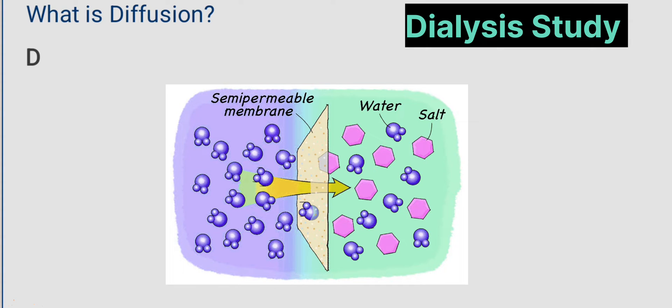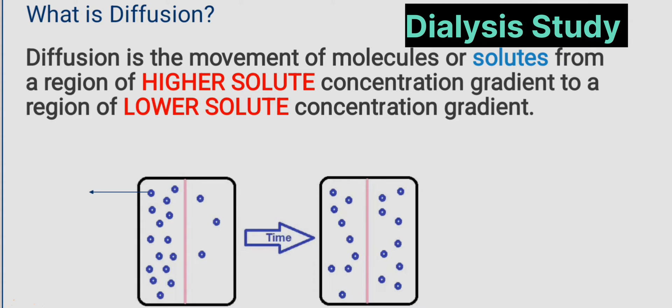So what is diffusion? Diffusion is the movement of molecules or solutes from a region of higher solute concentration to a region of lower solute concentration.